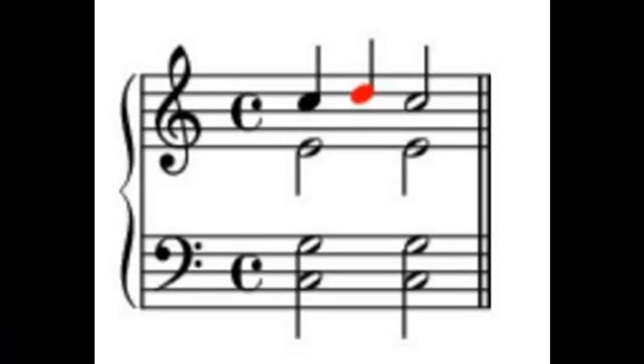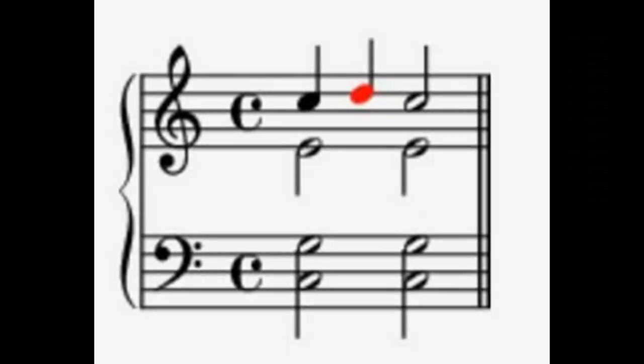Now we're going to look at the neighbor note. This is a non-harmonic note which lies above or below the harmonic notes in question. We start out with a harmonic note; if it is an upper neighbor note, it will be above the harmonic notes. For example, we start with C in the soprano, introduce a non-harmonic note D, and then it goes back to the harmonic note C. If it is a lower neighbor note, the non-harmonic tone will lie below the two harmonic tones.